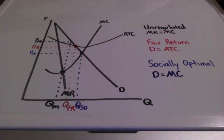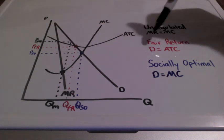Because the last thing the government wants to do is regulate to the point where the firm is experiencing major losses, the two can come to an agreement called a fair return.